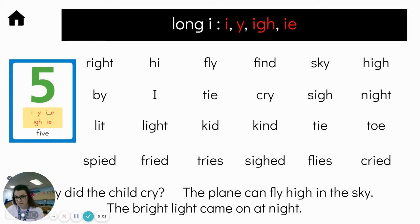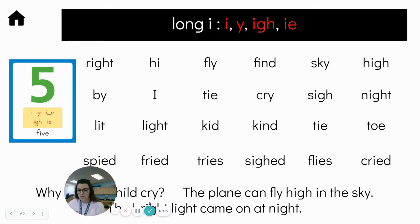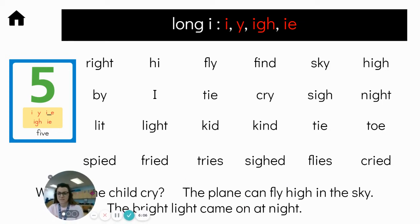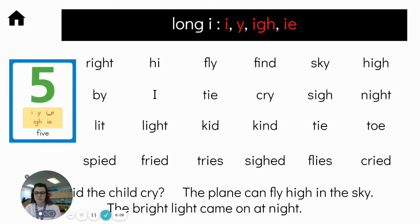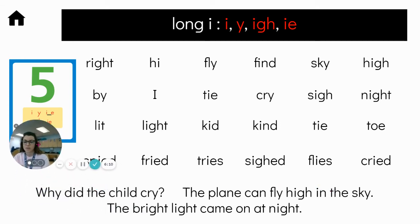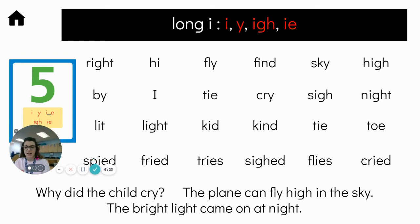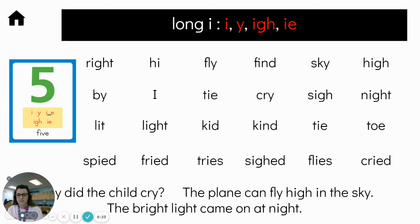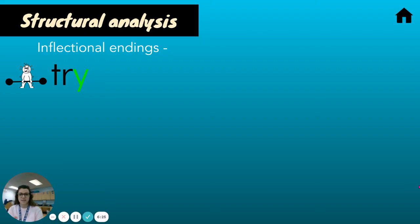Let me move so you can see better. Why did the child cry? The plane can fly high in the sky. The bright light came on at night. Okay, let's look at our next slide.